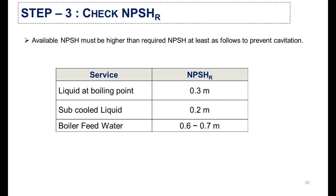In the third step, you will check the net positive suction head required (NPSHr). It is important that the available NPSHa must be higher than the required NPSHr. In this table, typical values of NPSHr are given: for liquid at boiling point it is 0.3 m, for subcooled liquid it is 0.2 m, and for boiler feed water it is 0.6 to 0.7 m.